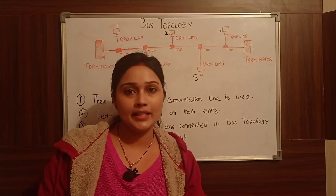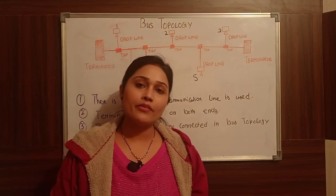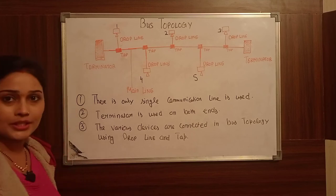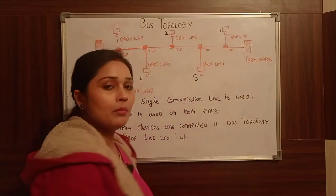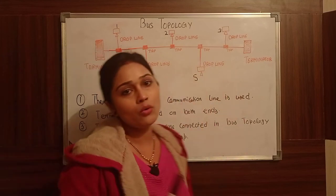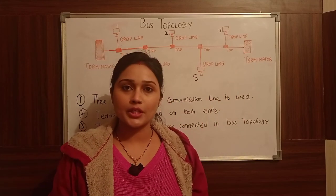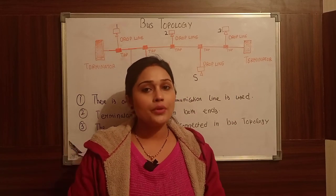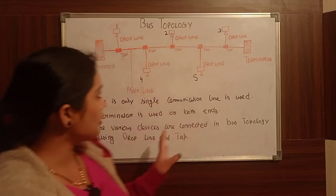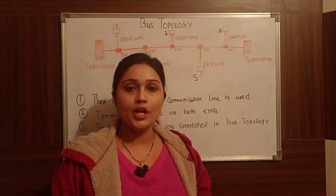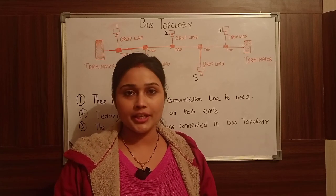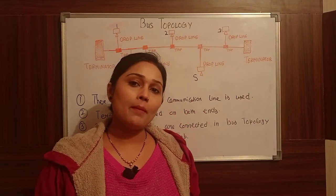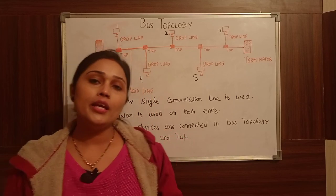The biggest disadvantage is that because a single line is used, any problem in this line means the entire network will fail. If the single line goes down, the network will fail. The second disadvantage is that we cannot attach too many devices — only limited devices can be attached because this is a linear sequence.